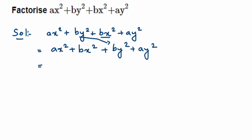Now I'm going to start taking common factors. In the first two terms, x² is present in both. Taking x² out as a common factor: from ax² we get a, and from bx² we get b. So the first group gives x²(a + b).